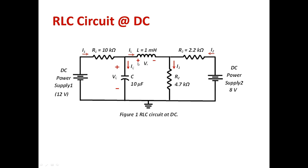At DC, the inductor behaves as a short circuit. The reason is that the voltage across the inductor as a function of time is defined as L·dI/dt. If the circuit is DC, then this derivative equals zero because nothing is changing with respect to time. That leads to the voltage across the inductor being L times zero, which is basically zero.